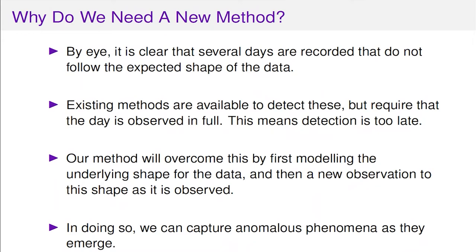A second question you might have is: why do we need a new method? Surely there are existing things that do this? At the minute, either existing methods don't deal with the kind of complex moving shape of the behaviour we see, or if they do, they require the day to be observed in full. We didn't want to find out at midnight the following day that something went wrong at ten past two - that's 22 hours late. So we need a new method that can do it in an online fashion. Our method overcomes this by first modelling the underlying shape, then comparing a new observation to that shape as it's observed, capturing the anomalous phenomena as they emerge.